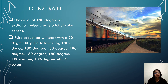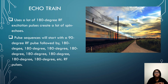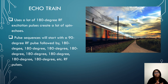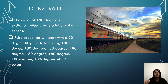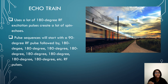For the echo train, it uses a lot of 180-degree RF excitation pulses. Think of it like a train — you start with a 90-degree RF pulse and then it is followed by many 180-degree pulses: 90 degrees, then 180, 180, 180, 180, 180 — creating that echo train.